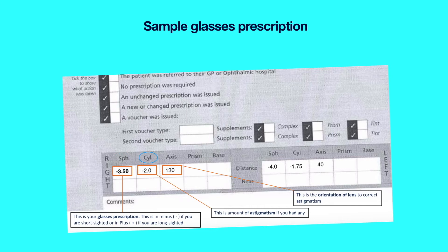You can see under CYL, which stands for cylinder, the patient has minus 2 diopters in the right eye and minus 1.75 diopters in the left eye. This means he has astigmatism of 2 diopters in the right and 1.75 diopters in the left eye.